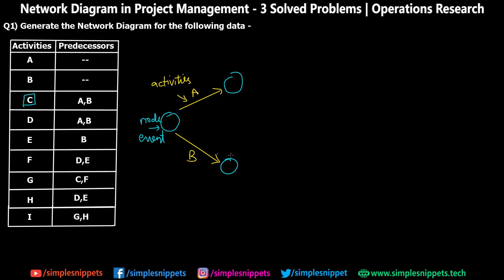We create a dummy activity from B, denoted by dotted lines — I'm drawing dotted orange lines. This dummy activity does not consume any resources or time. It just shows that A and B meet at a single event, because to start C you must complete both A and B. Right now A results in one event and B in another, and they cannot come to one single point since they start from the same node — that's not allowed. So we need a dummy activity here compulsorily. In general, avoid using dummy activities and only use them when there is no other option.